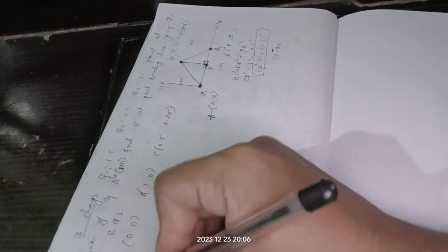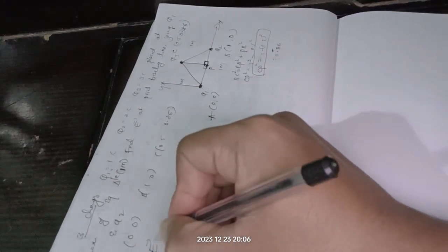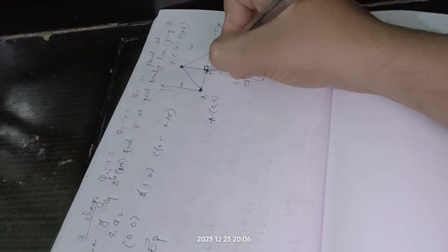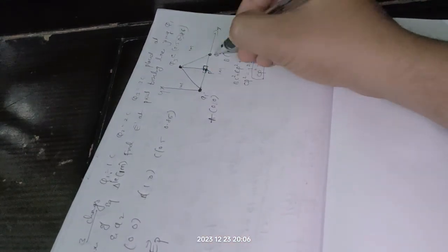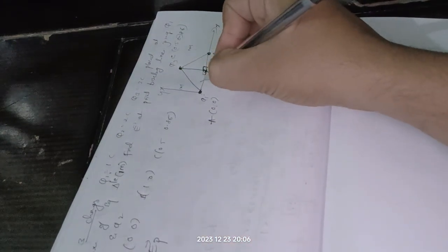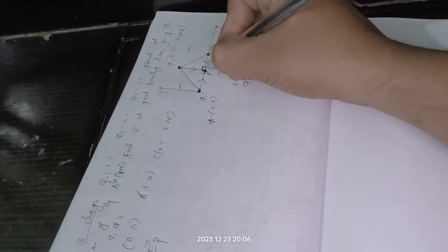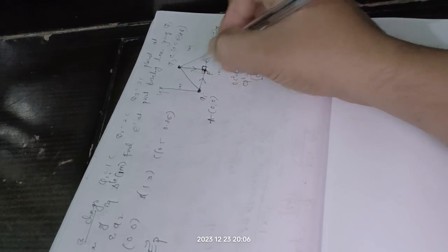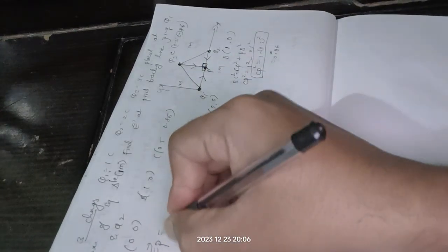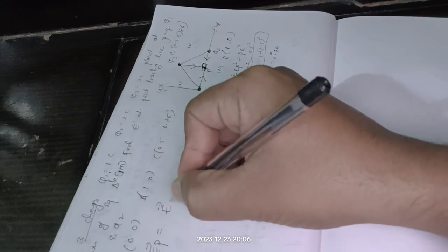Okay, so here we got three points. So here I will write A(0,0), B(1,0), C(0.5, 0.86). So here what we should find? I will write here 'To find': what we should find is electric field intensity at point P.